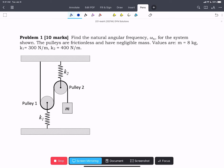In this problem we're asked to find the angular natural frequency for this system where we have a rope running around two pulleys that are held up by springs and there's a mass at the end of the rope. We're told the pulleys are frictionless and have negligible mass and we're given values for the spring constant and the mass of the block at the end.